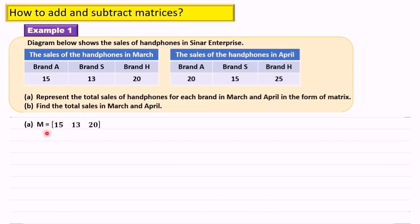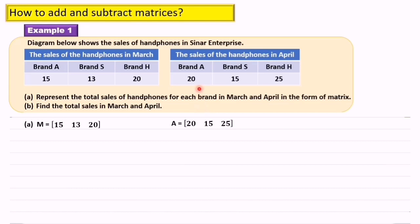Let us represent matrix M as the sales of handphones in March. Don't forget to write the bracket. Inside the bracket we write 15, 13, 20. Now I represent matrix A as the sales of handphones in April. We draw the bracket and fill in the numbers 20, 15 and 25.